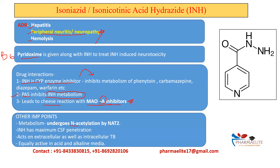Isoniazid undergoes acetylation metabolism, so its levels will vary in slow acetylators and fast acetylators. Isoniazid also has maximum CSF penetration. Notably, pyrazenamide has maximum sterilizing activity. Isoniazid is effective both for extracellular and intracellular bacteria, whereas streptomycin is effective only for extracellular bacteria and pyrazenamide only for intracellular bacteria. Isoniazid is equally active in acidic and alkaline medium, while pyrazenamide is effective only in acidic medium.